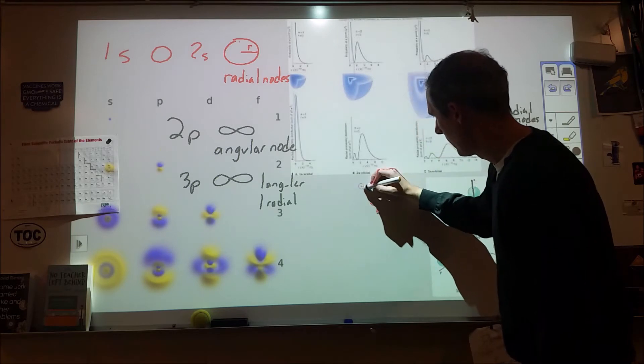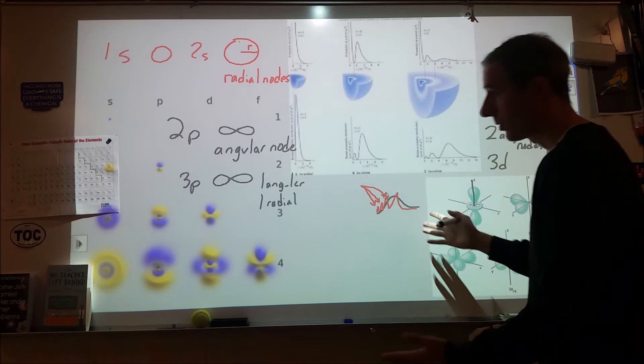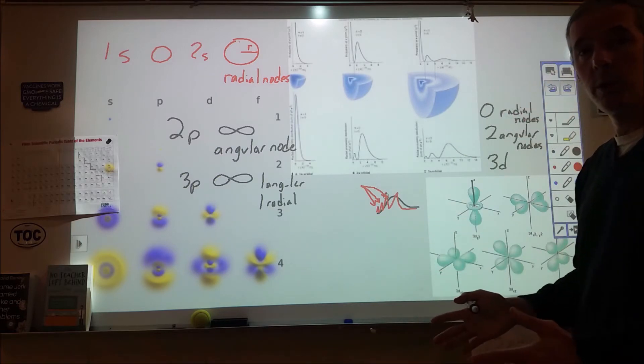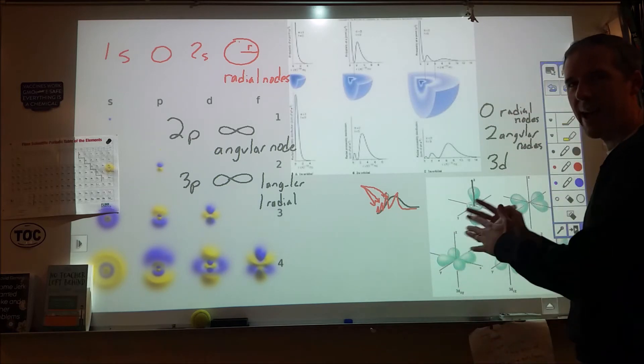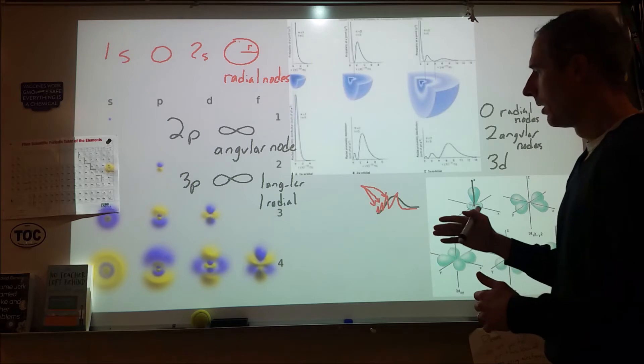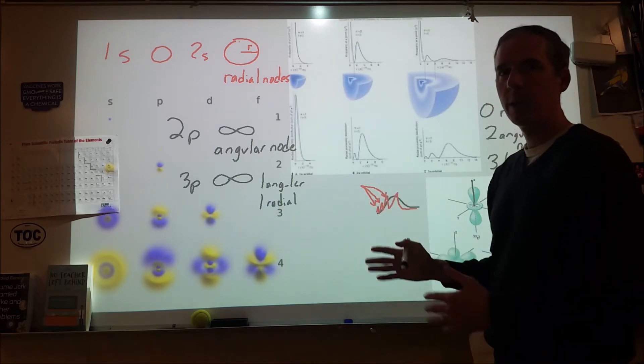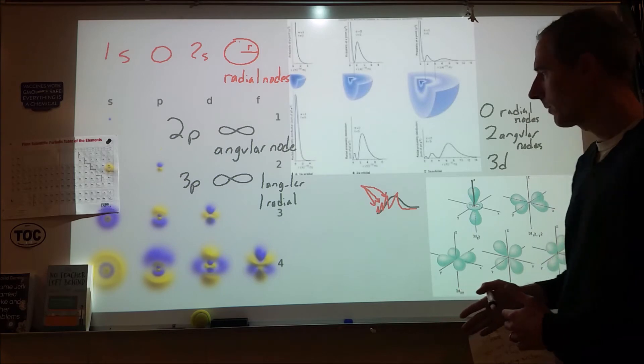Here's the big idea that's important. This portion of the 4s electron state, these portions, are closer to the nucleus. And so what we have happen is that the 4s electron, even though on average it's further away from the nucleus than the 3d is, there are portions of it that are very close because of the way that these radial nodes are set up.